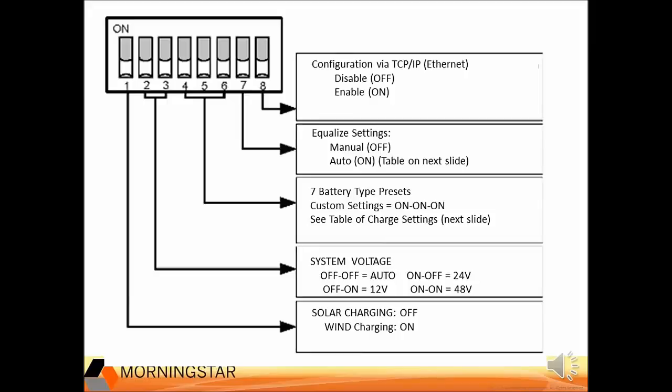Disabling float, timing, high voltage disconnect settings, and charge mode limits — all of these will only be enabled with DIP switches 4, 5, and 6 on. So when you make a custom setting, you need to have switches 4, 5, and 6 on to activate the charge settings.